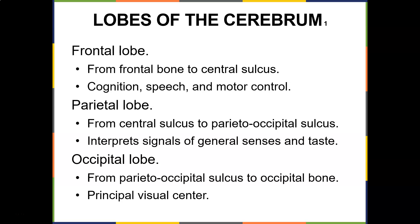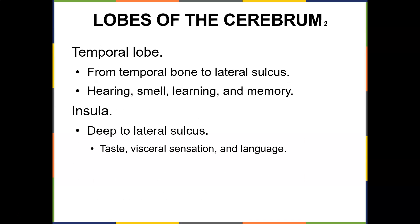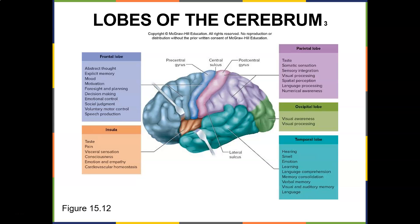The parietal lobe, from the central sulcus posteriorly, interprets signals of general senses and taste. The occipital lobe, from the parieto-occipital sulcus to the occipital bone, is the principal visual center. The temporal lobe is for hearing, smell, learning, and memories. The insula, deep to the lateral sulcus, handles taste, visceral sensation, and language.